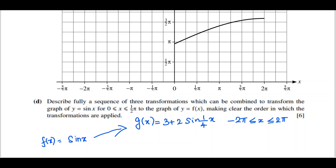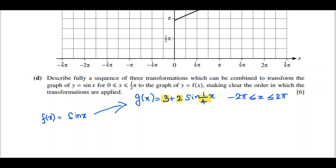Here we can see: the 1/4 inside the sine represents a stretching with factor 4 along the x-direction; the 2 represents a stretching with factor 2 along the y-direction; and the 3 represents a translation along the y-direction. We must apply the x-direction stretch first, then the y-direction stretch, then the translation. The translation vector is (0, 3).